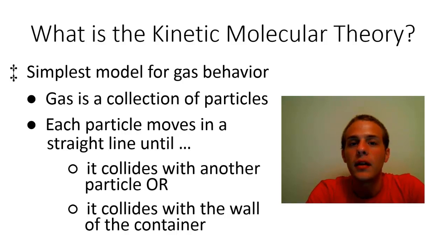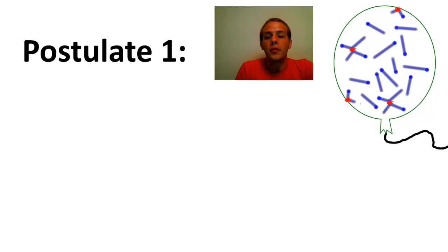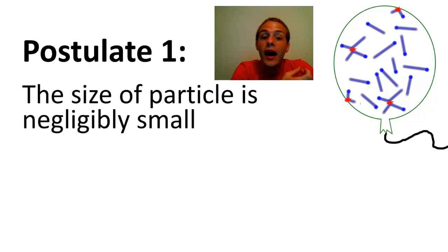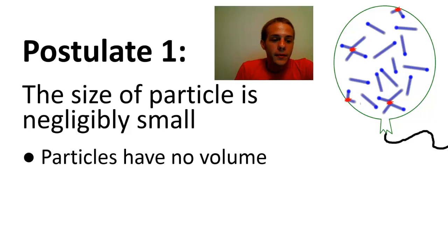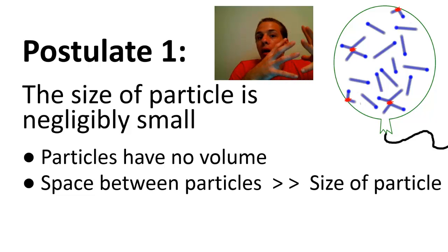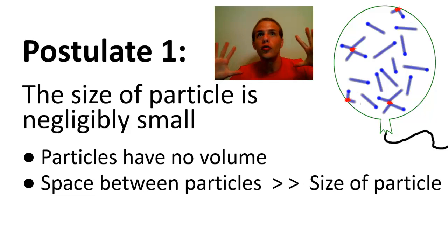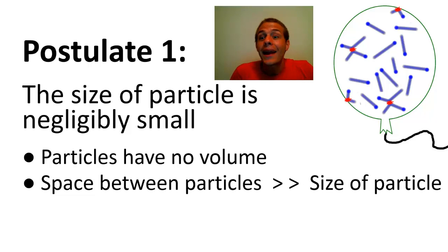There are a couple of postulates of the kinetic molecular theory that are pretty important and that we need to understand. The first postulate has to do with the size of a particle. Under the kinetic molecular theory, it is understood that the individual gas particles don't occupy any volume. This seems a little peculiar at first because we know that the particles have mass. The reason why the particles are assumed to have no volume is because the space in between the particles on average is much, much larger than the size of each individual particle. So this approximation turns out to be quite adequate most of the time.